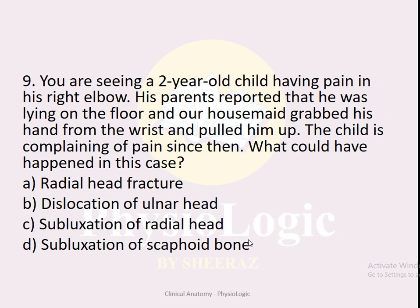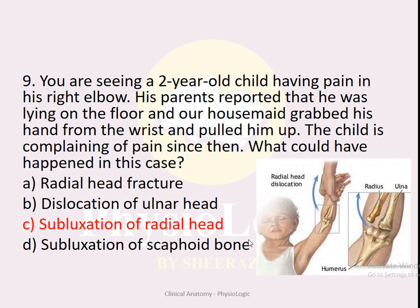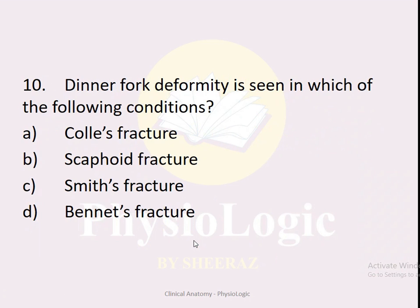MCQ number nine: A two-year-old child has pain in his right elbow after a housemate grabbed his hand from the wrist and pulled him up. Options: A — radial head fracture, B — dislocation of ulnar head, C — subluxation of radial head, D — subluxation of scaphoid bone. The correct option is C — subluxation of radial head. This condition is known as pulled elbow or nursemaid's elbow, where the radial head subluxes from the annular ligament.